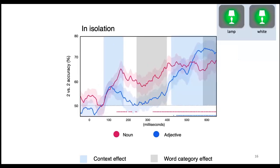The last condition is isolation: in the noun isolation condition, they say only the object identity. Here we see an early bump for the noun, which stays above chance all the way from about 325 milliseconds to the end of the trial. The adjective in isolation has no early above-chance accuracy but starts ramping up at about 450 milliseconds — slightly earlier than in the other two conditions — as you prepare to say the word.